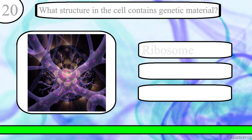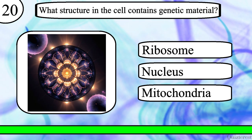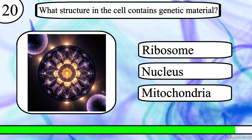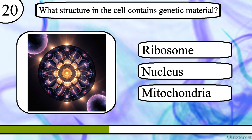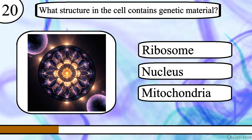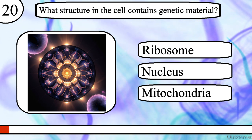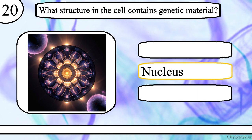Question 20. What structure in the cell contains genetic material? Ribosome, nucleus or mitochondria? The correct answer is nucleus.